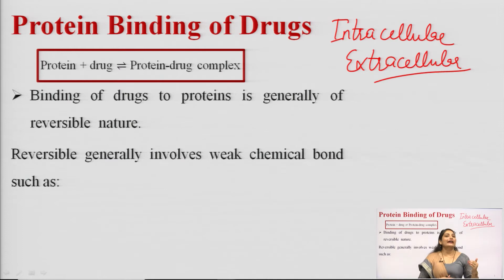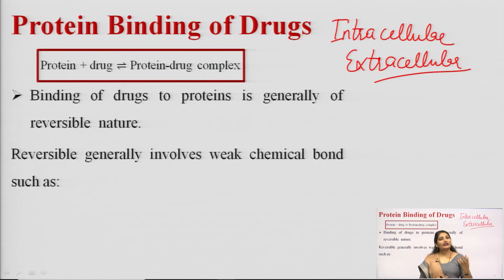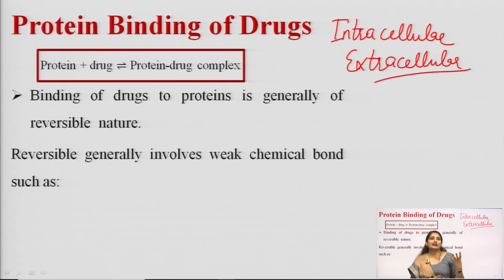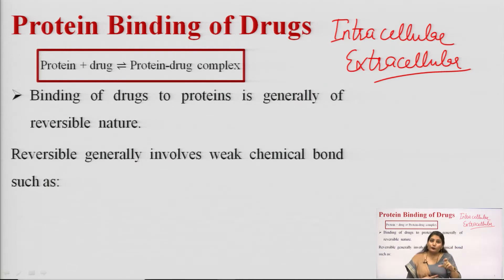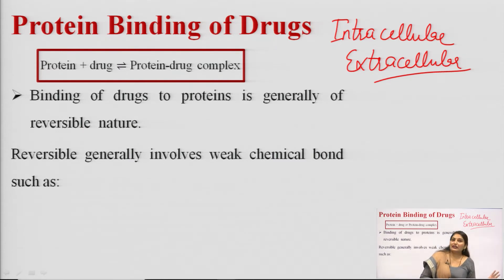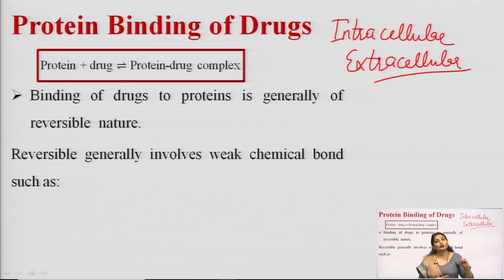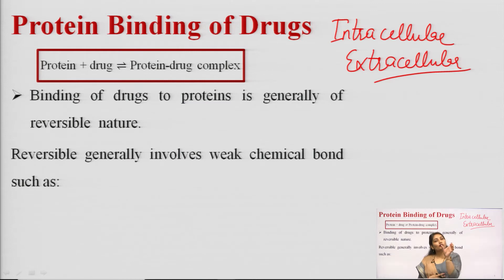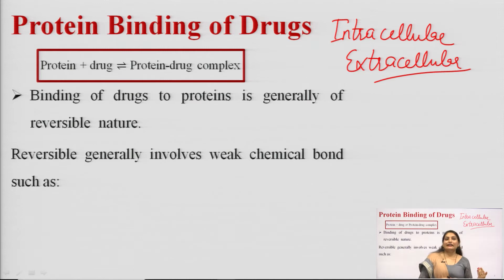The second type is extracellular binding, where the drug molecule binds to extracellular proteins such as plasma proteins. When the drug binds to plasma protein, it will be pharmacologically inactive and pharmacodynamically inert — it will not show any response. That is why these protein molecules are known as secondary receptors or silent receptors.